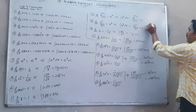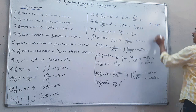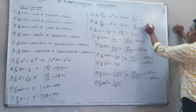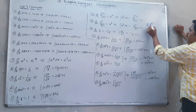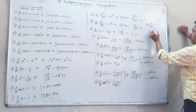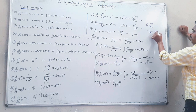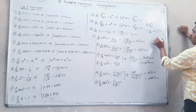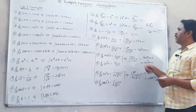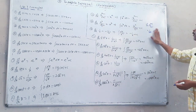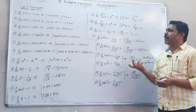x to the power n: in differentiation the power decreases; here in integration the power increases to balance. So the derivative of x to the power n plus 1 upon n plus 1 gives x to the power n. Rearranging, the integral of x to the power n dx equals x to the power n plus 1 upon n plus 1 plus c.